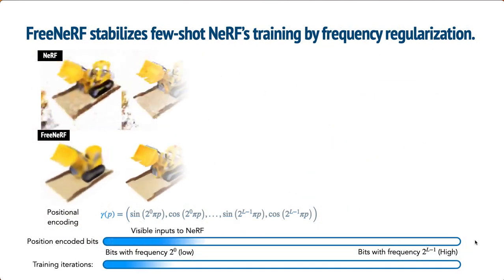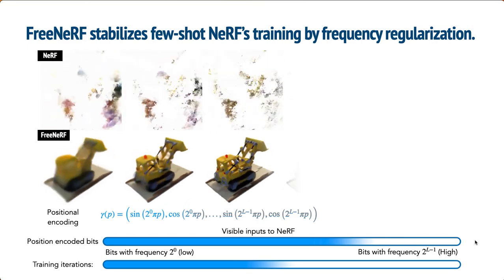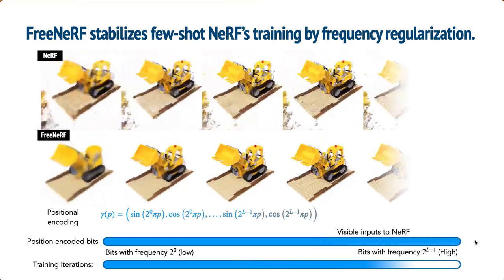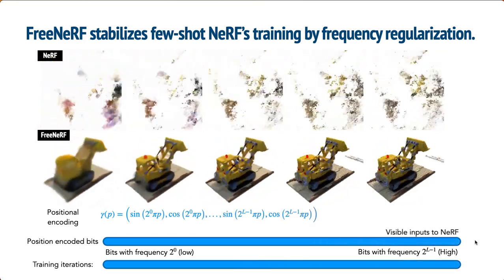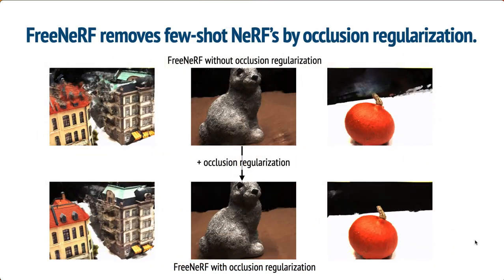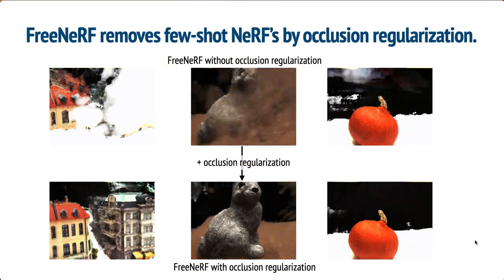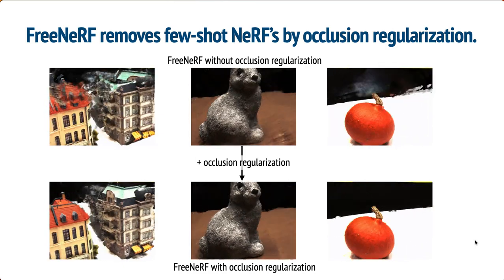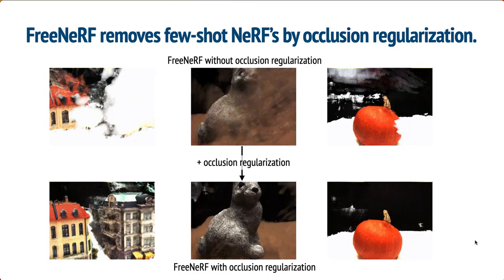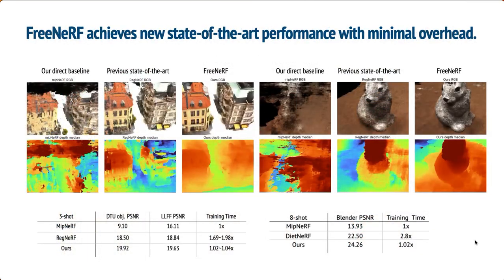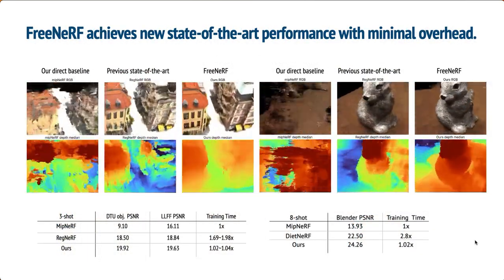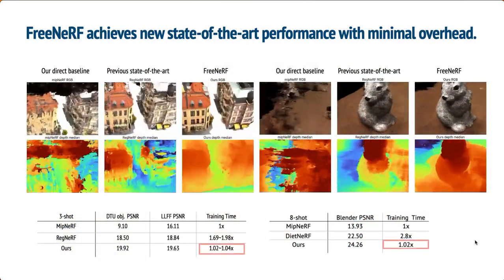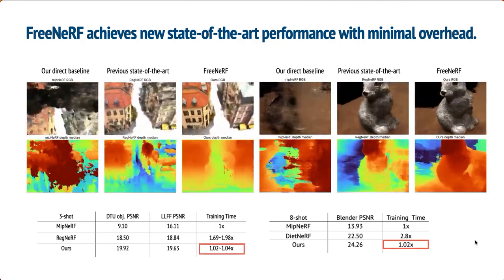FreeNeRF employs two techniques to address this issue. First, it stabilizes few-shot NeRF training through frequency regularization. Next, we apply our proposed novel and effective occlusion regularization to penalize near-camera floaters. We achieve new state-of-the-art performance on three benchmarking datasets with minimal computational overhead.